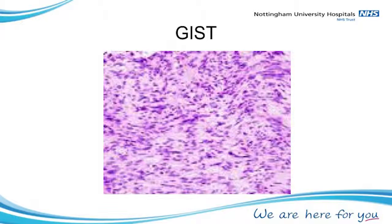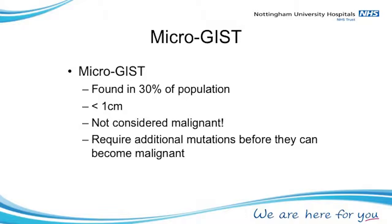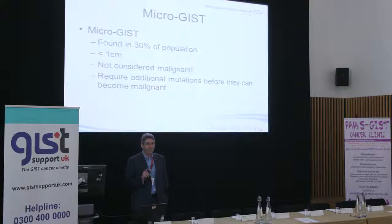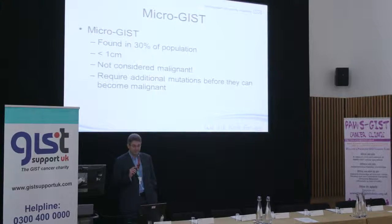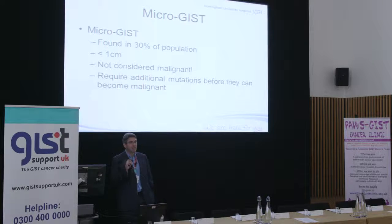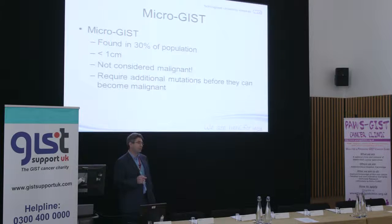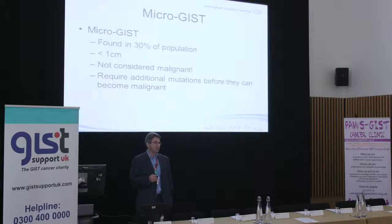So what is GIST? Before going further, I'm not going to talk about micro-GIST today. Micro-GISTs are common, small, and not malignant — they don't spread as far as we know. There are genetic changes that have to happen for a micro-GIST to possibly become a real or malignant GIST. They are found quite often; if patients have bowel removed for other reasons you can find a little GIST in there, but that's not what we're talking about today.